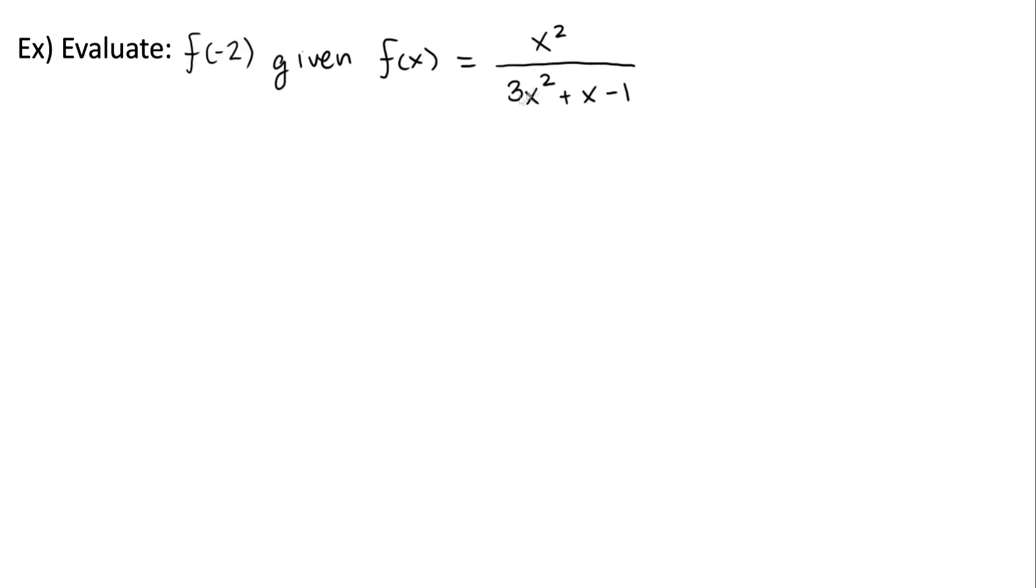We're just going to take negative 2, plug it in everywhere we see an x in the original equation, and remember to include parentheses when we're doing that. So f of negative 2 is equal to negative 2 squared over 3 times negative 2 squared plus negative 2 minus 1. Then we end up getting 4 over 9 as our answer.